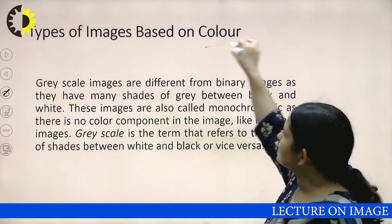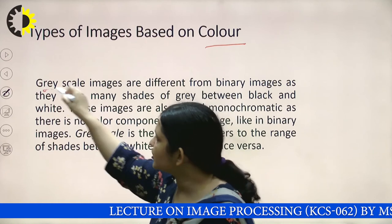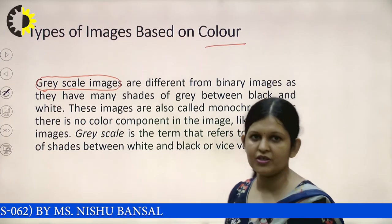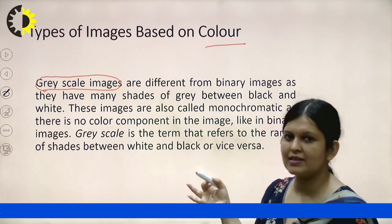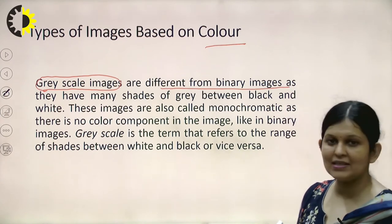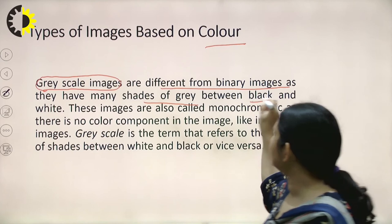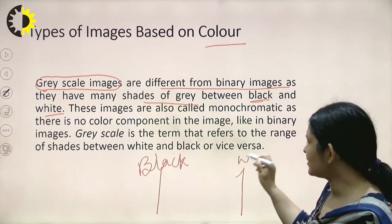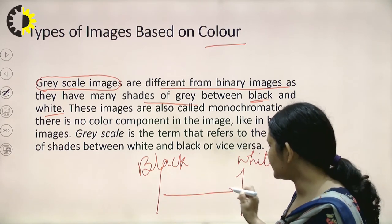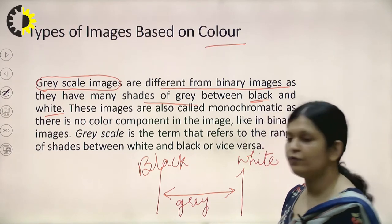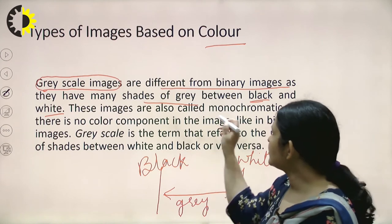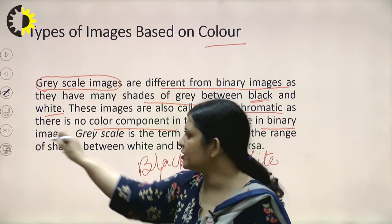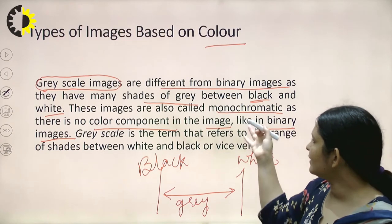Based on colors, grayscale images are widely used in image processing. They are different from binary images as they have many shades of grey between black and white. The grey shades in between form the grayscale image. These are also called monochromatic images as there is no color component, similar to binary images. Grayscale refers to the range of shades between white and black.